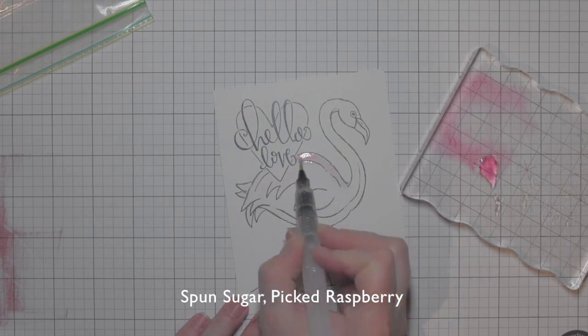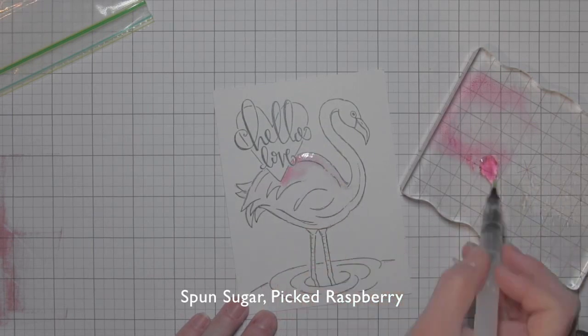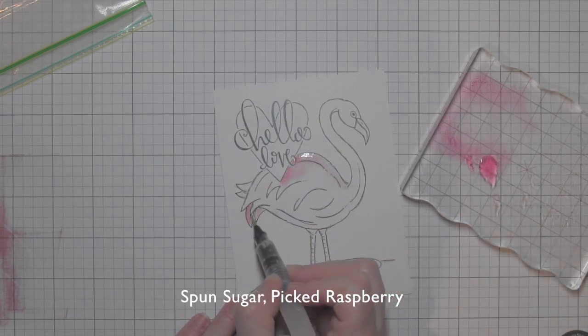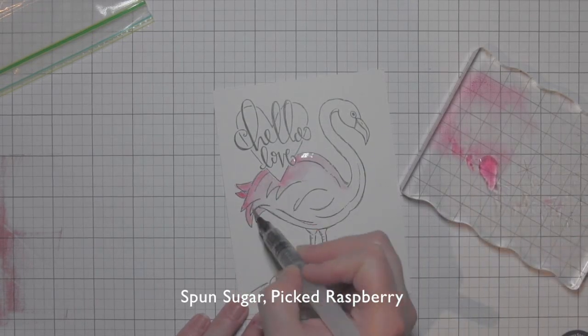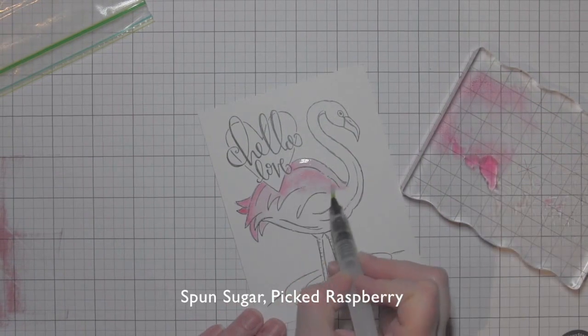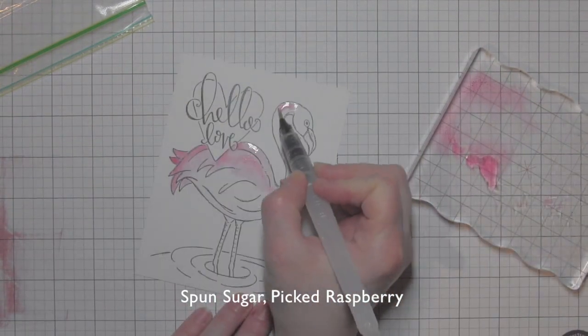I'm going to add a few additional details to dress this up just a little bit. I'm coloring my images with distress inks and a water brush pen. I'm using a combination of spun sugar and picked raspberry to start.